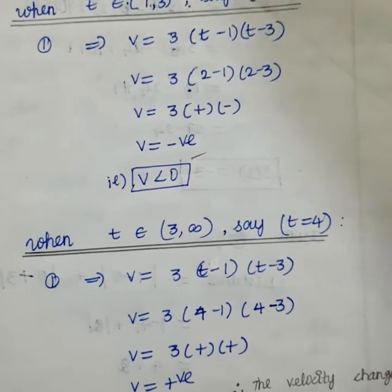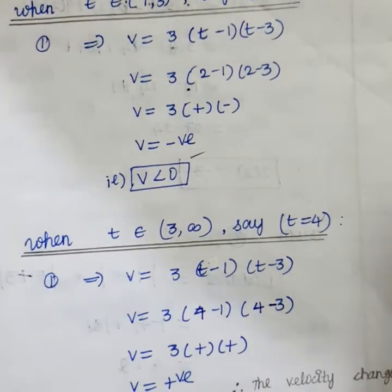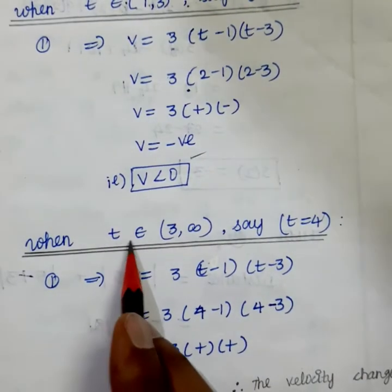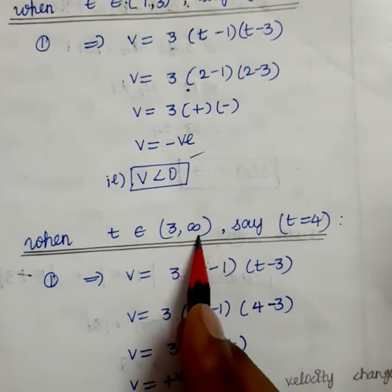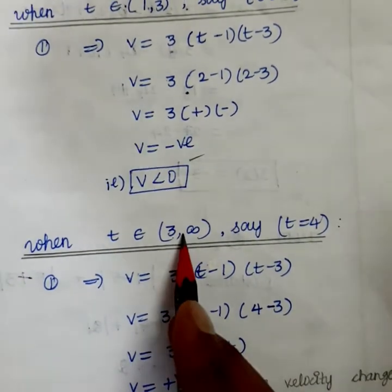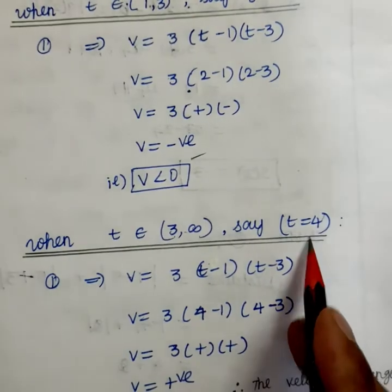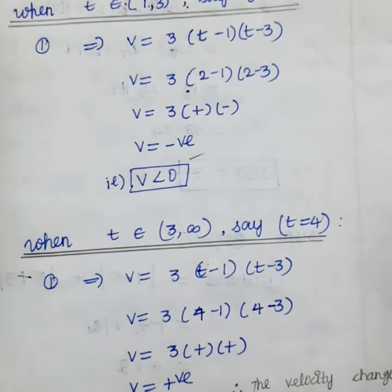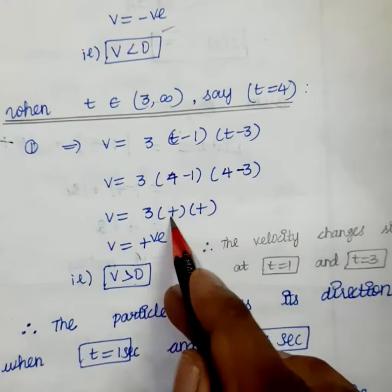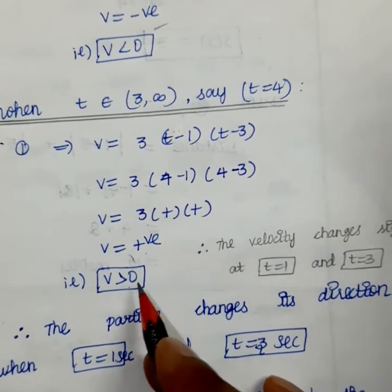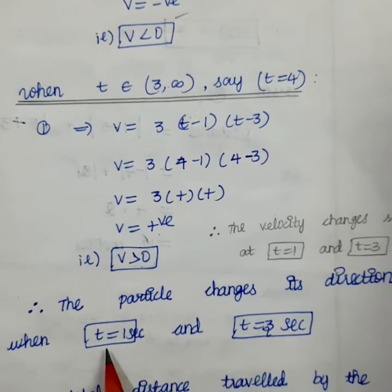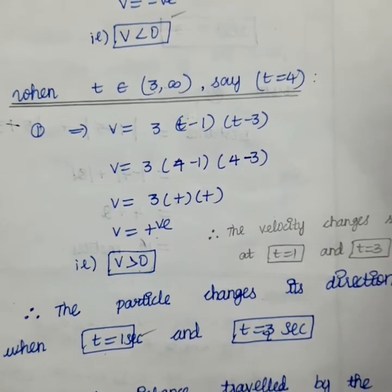Since the velocity changes sign from positive to negative at t = 1, and from negative to positive after t = 3, the particle changes its direction at those points. Therefore, the particle changes direction when t = 1 second and t = 3 seconds.